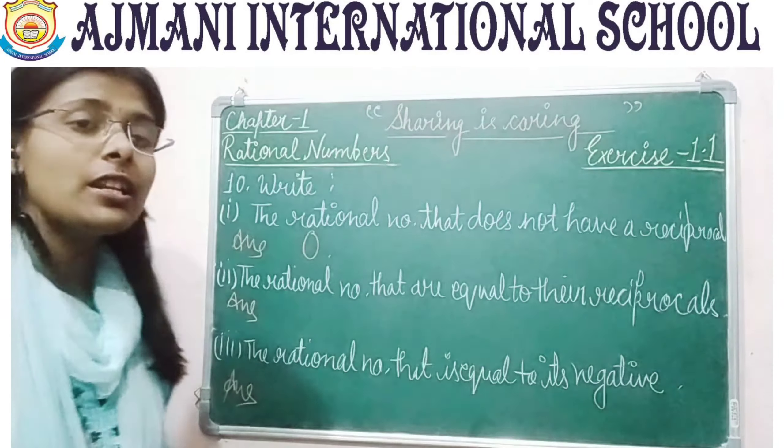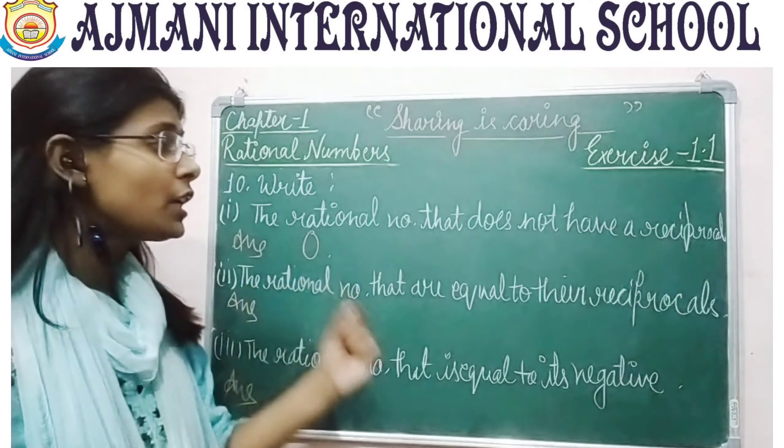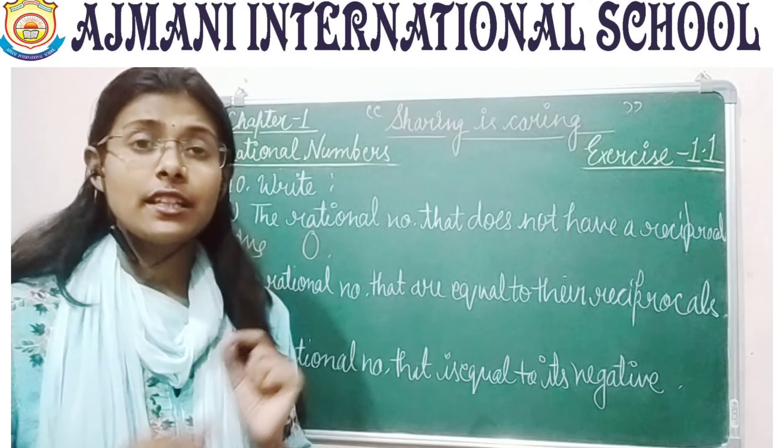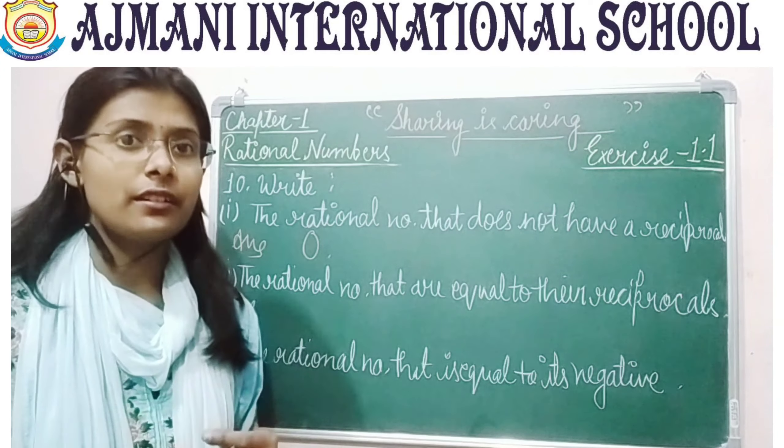The second part of question 10: the rational numbers that are equal to their reciprocals. The answers are 1 and minus 1. The reciprocal of 1 by 1 is 1, and the reciprocal of minus 1 by 1 is again minus 1. The third part: the rational number equal to its negative — the answer is again 0, because plus 0 and minus 0 do not differ.